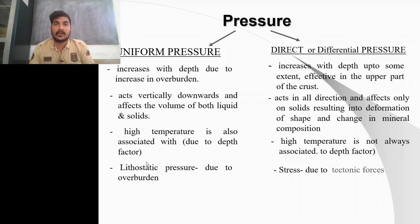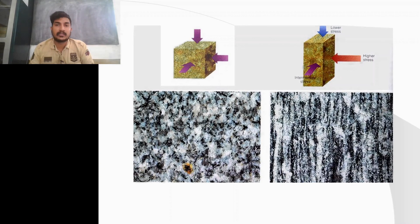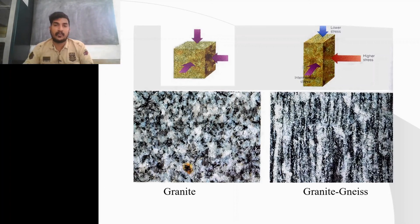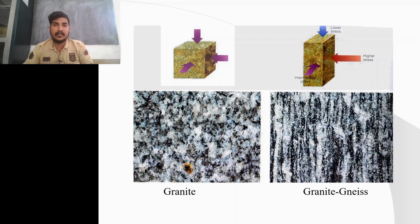Consider a granite experiencing first uniform pressure and then directed pressure — the results are entirely different. When minerals experience pressure from all directions, they tend to form spherical or rounded shapes. But if pressure is directed from a particular direction, the minerals tend to align perpendicular to that major stress direction, so the rock appears foliated — minerals in the rock align in a particular direction, always perpendicular to the major pressure direction.